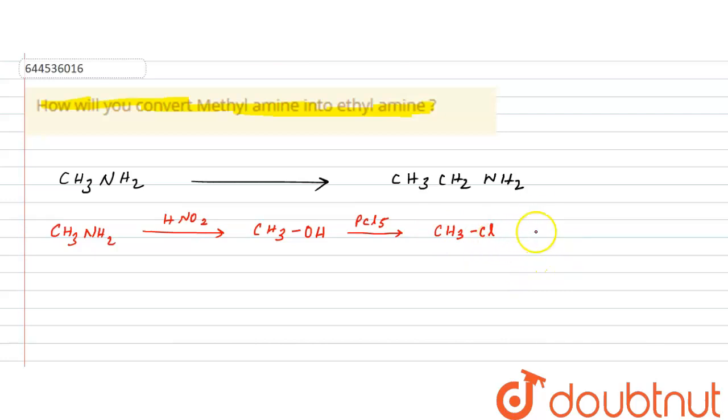Now we know that whenever alkyl halides are treated with any cyanide like KCN, if you treat alkyl halides with KCN you will get the formation of CH3CN. This is very important reaction.